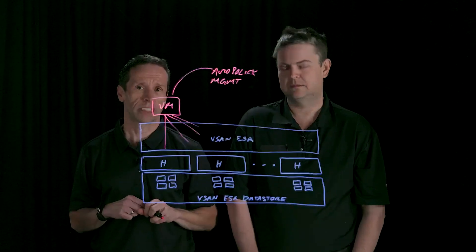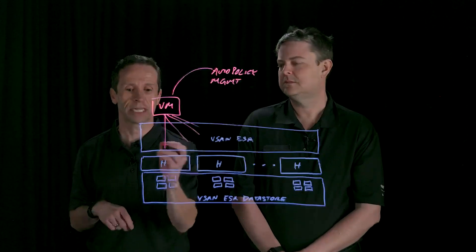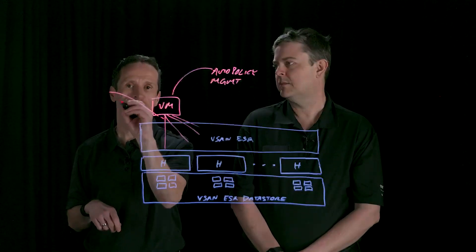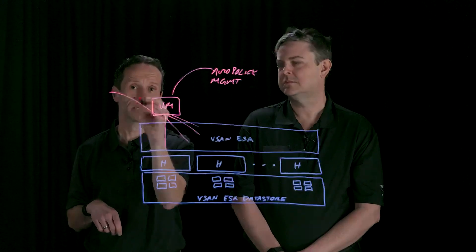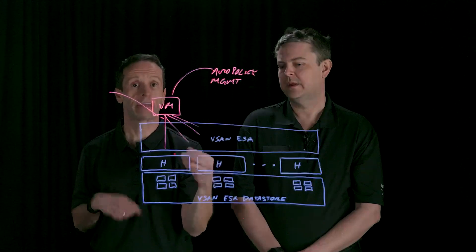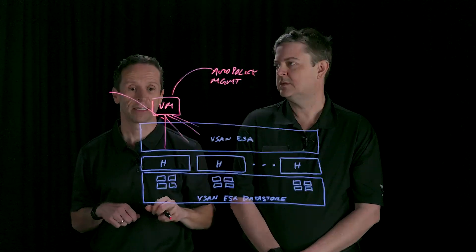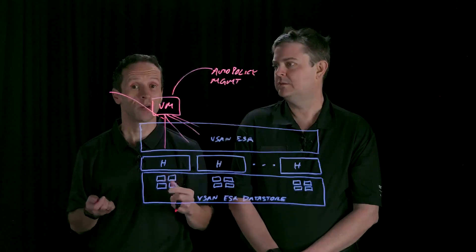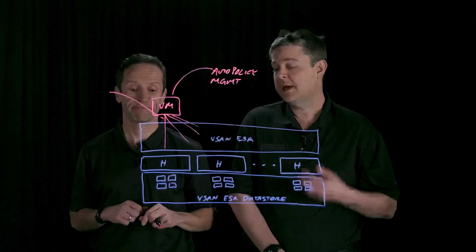And one of the things that we introduced in vSAN 8 Update 1 and Update 2 is a new adaptive write path. So this is going to choose one of two possible write paths that will write the data in the most efficient way and therefore the fastest way. And that's something where we've seen extraordinary improvements on a new architecture that was already fast as it is.